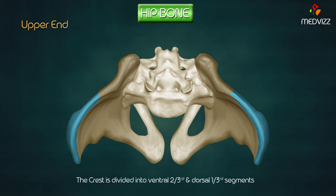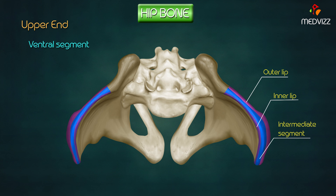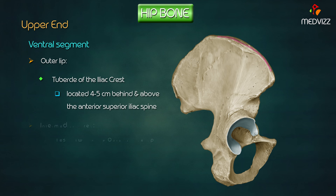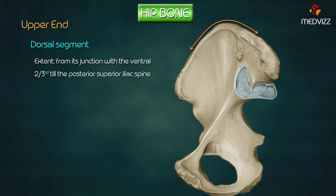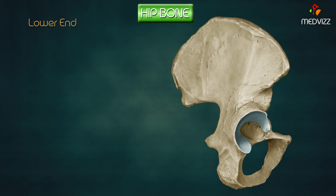The crest is divided into ventral two-thirds and dorsal one-third segments. The ventral segment presents with an outer lip, inner lip, and an intermediate area. The outer lip presents with a tubercle about five centimeters behind and above the anterior superior iliac spine, known as the tubercle of the iliac crest. The dorsal segment extends from its junction with the ventral two-thirds to the posterior superior iliac spine, presenting an inner and outer surface separated by a ridge. The lower end forms about two-fifths of the articular surface of the acetabulum.